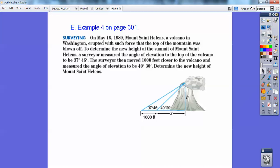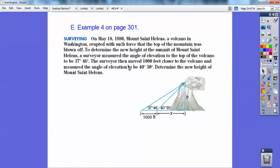It came down and our skies turned gray because of all the ashes when it erupted. Anyways, it erupted with such force that the top of the mountain was blown off. To determine the new height of the summit of Mount St. Helens, the surveyor measured the angle of elevation from the top of a volcano. So here he is out here, measures at 37 degrees, 46 minutes. So I'm going to change that 46 minutes to degrees. So I'm going to multiply or divide that by 60 to get my degrees. The surveyor then moved up 1,000 feet.